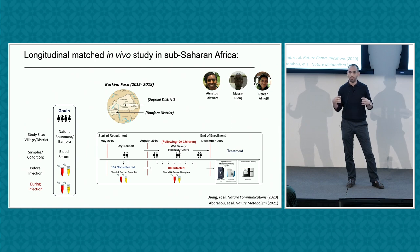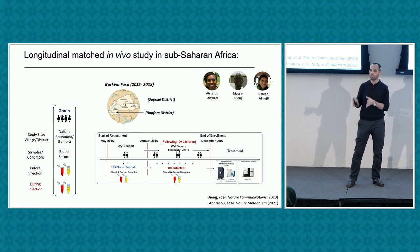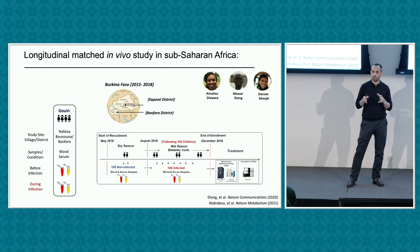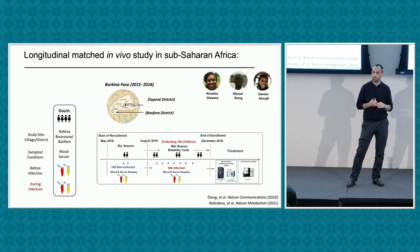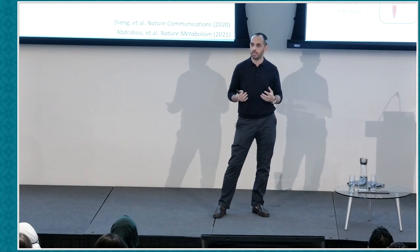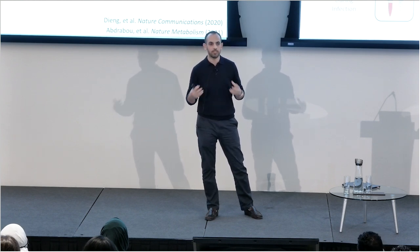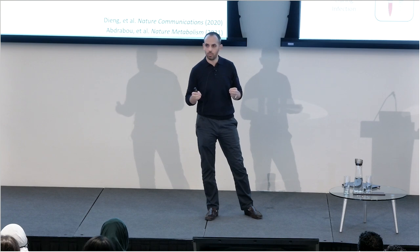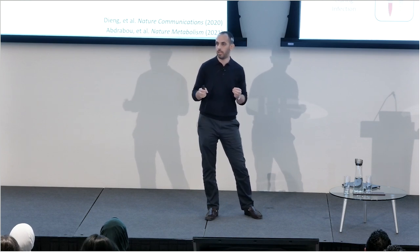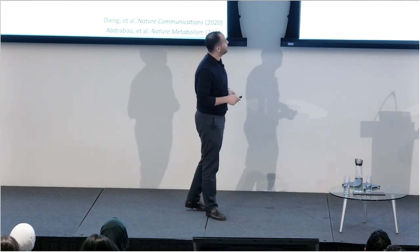We used metabolomics with liquid chromatography and mass spectrometry, and separately, lipidomic profiling using gas chromatography and mass spectrometry. The reason for two methods is that we wanted to dig deep — you can detect some lipids with metabolomic profiling, but with gas chromatography you can achieve much higher resolution in the lipidomic data and see the changes happening during infection in the same child.